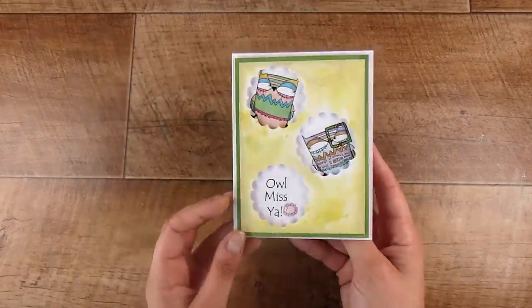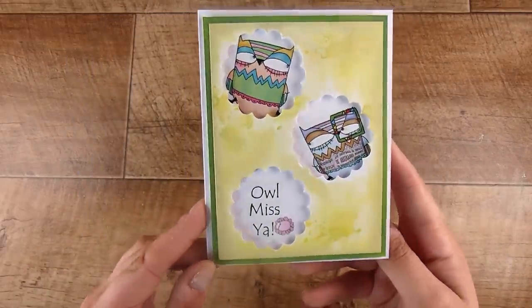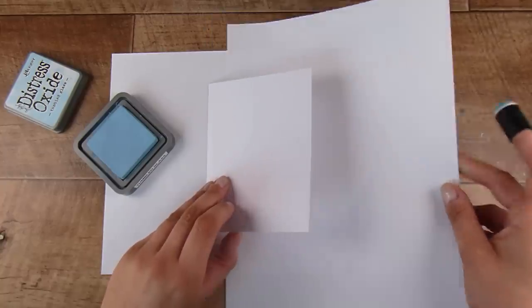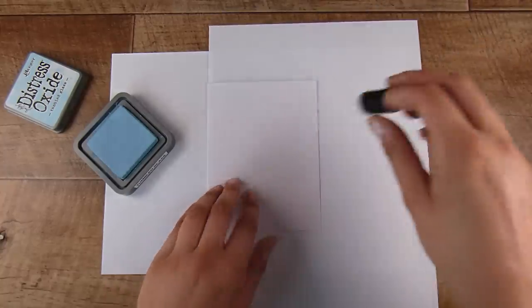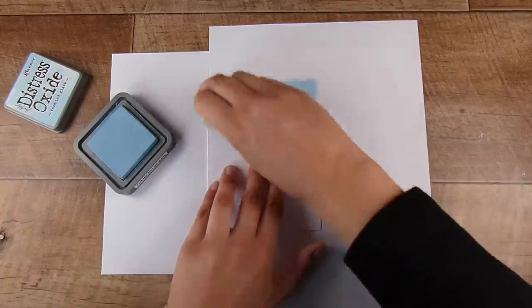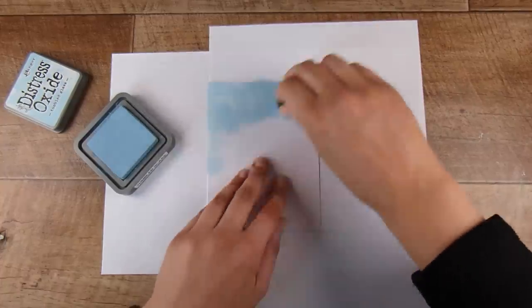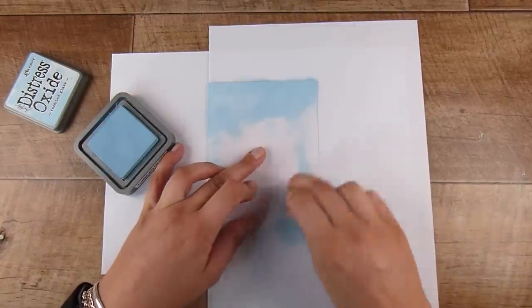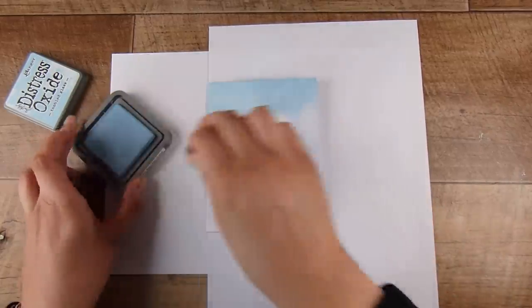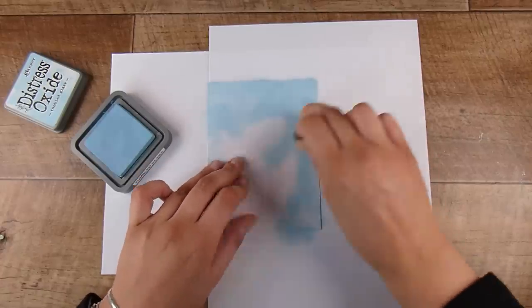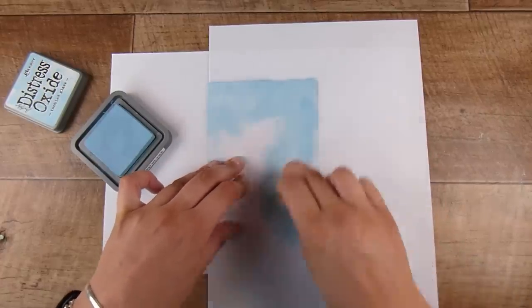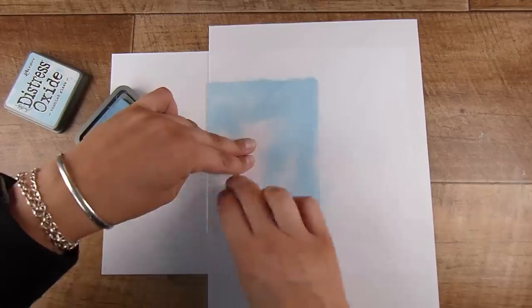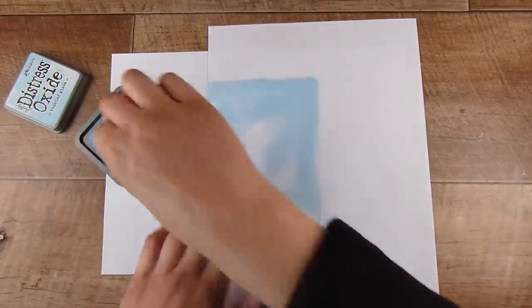For this next one I'm going to use the same owl, so it's going to be pretty similar but ends up looking really different. I'm going with blues for this one, just because I went with greens last time which is outside my comfort zone. I'm going to add some Tumbled Glass Distress Oxide ink, I'm using a finger dauber, and my ink pad needs re-inked.